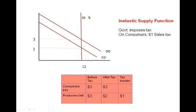And the reason is the supply function is inelastic. As you change prices, the supply doesn't shift or move much. The quantity supplied remains the same at 12 units.